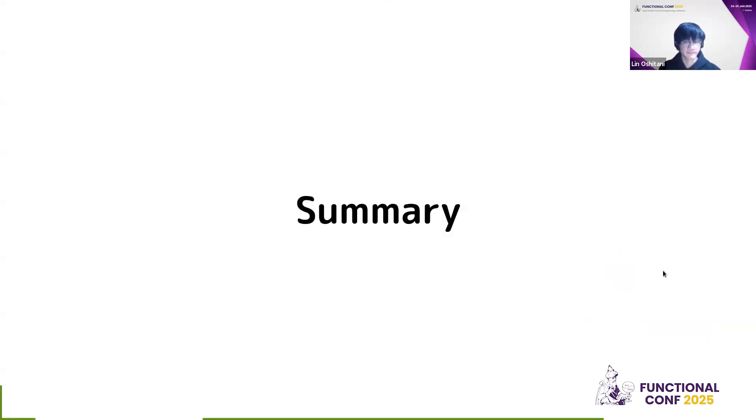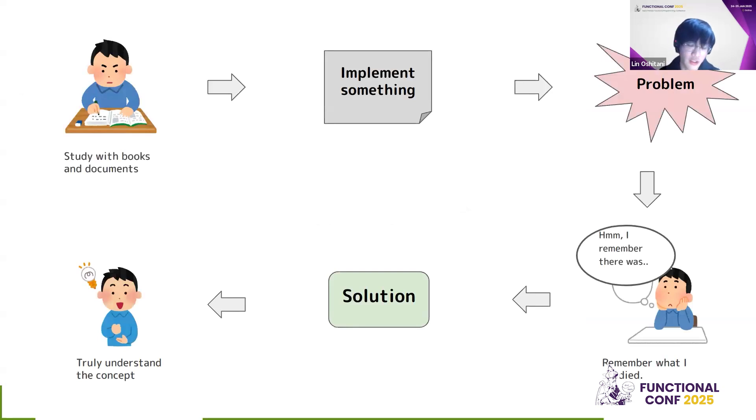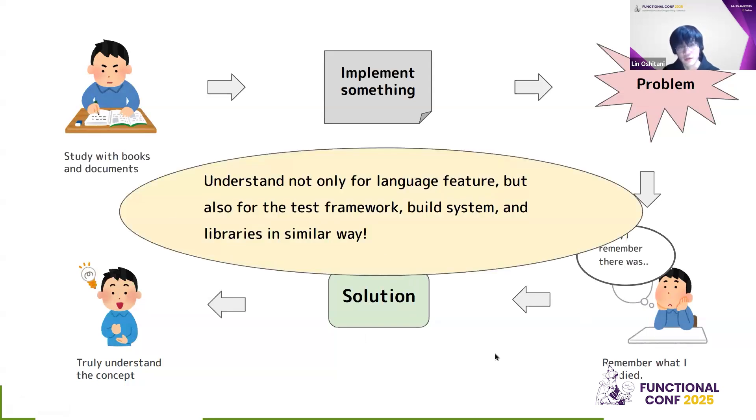Now here's a quick summary. So throughout this whole process of writing Camel Boy, I went through this whole cycle many times. First, I would be studying books and documents. I kind of understand the core concept, but I don't fully understand it. At least I feel like so. Then I go on and implement something. So specific parts of Camel Boy. Then I face a problem. Then at this point, I kind of remember when I was studying, there was this feature. Maybe I can use that. And then I implement the solution using that feature. And then at this point, I truly understand the concept that I was studying here. And this whole cycle, it was not only to understand the language feature, but also test frameworks, build system, and libraries all in a similar way. I would go through this cycle.